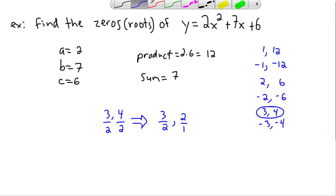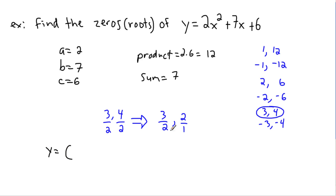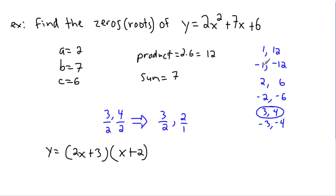Now I read bottom to top. For 3/2: the bottom is 2, giving 2x, then plus the top 3, so (2x + 3). For 2/1: the bottom is 1, giving 1·x = x, then plus 2, so (x + 2). Therefore y = (2x + 3)(x + 2). This is the fully factored form. This always works — as long as you can find two numbers whose product is ac and whose sum is b.